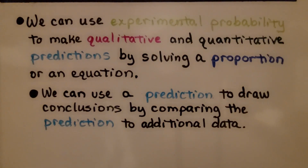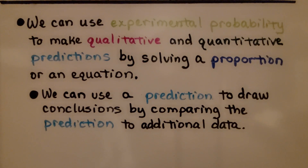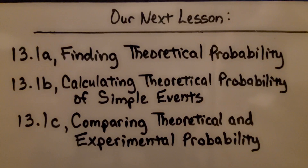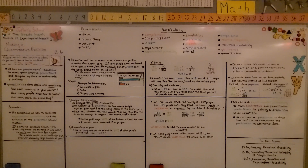We can use experimental probability to make qualitative and quantitative predictions by solving a proportion or an equation. We can use a prediction to draw conclusions by comparing the prediction to additional data. We're finished with module 12 and moving on to module 13, where we'll talk about theoretical probability. Knowing how to convert a percent to a fraction and decimal, and understanding vocabulary, will help you. Have a wonderful day and join me for the next module.